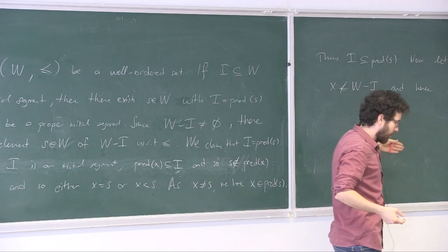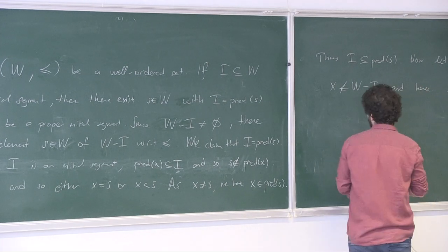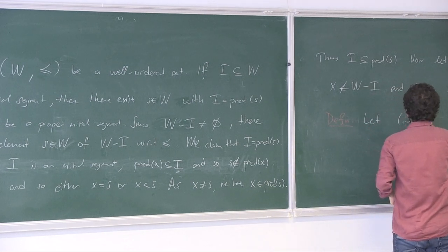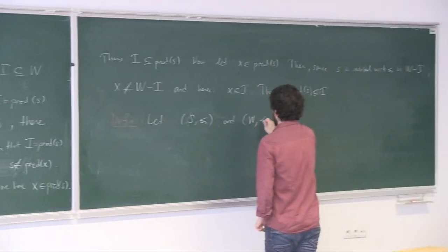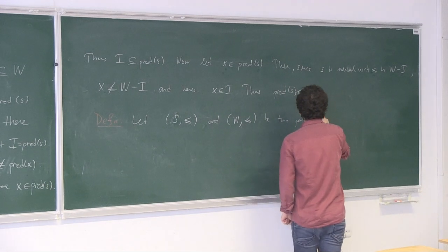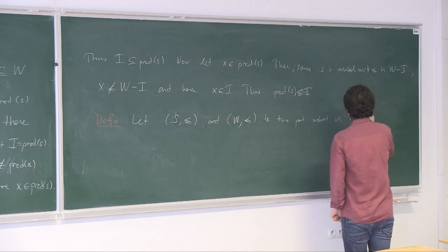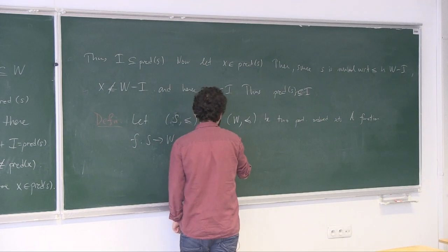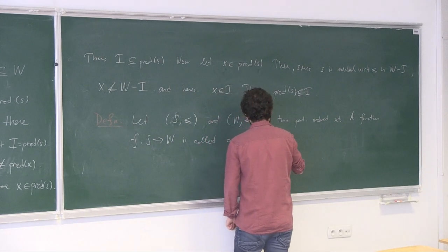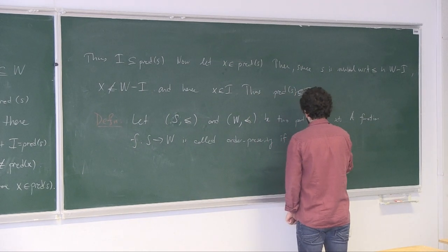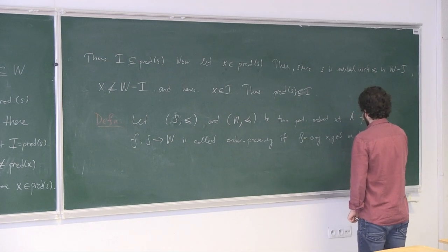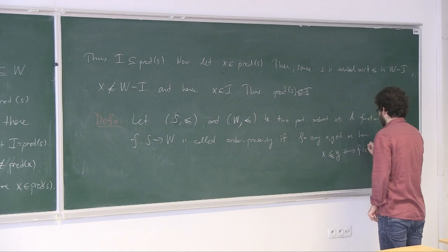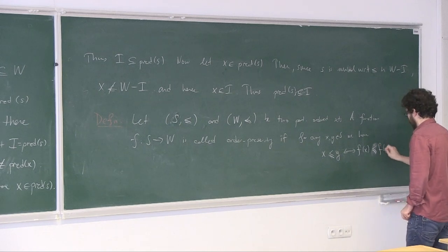Let (S, ≤) and (W, ⪯) be two partially ordered sets. A map f from S to W is called order-preserving if for every x, y in S we have: x ≤ y if and only if f(x) ⪯ f(y). This is in some sense non-standard — in order theory books, people usually just require the forward direction, calling those order homomorphisms. But requiring only that direction allows constant maps to be order-preserving, which we want to avoid.